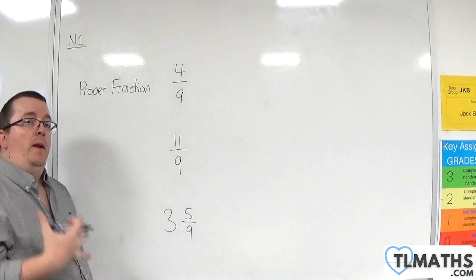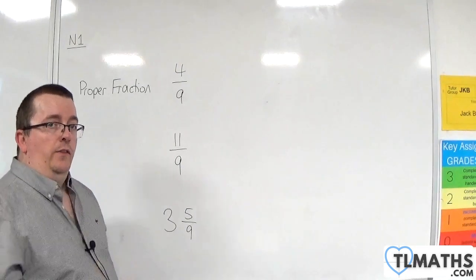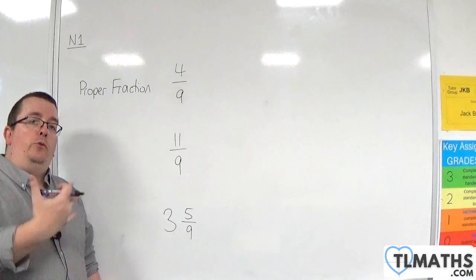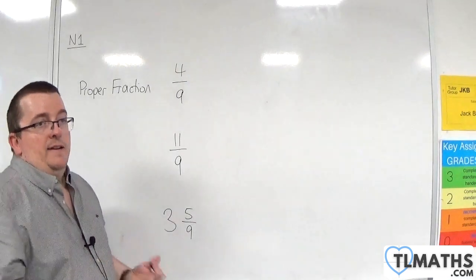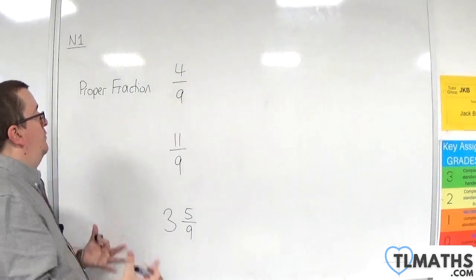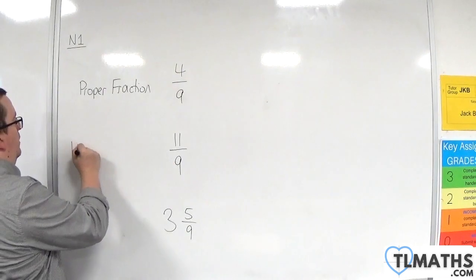Whereas the moment I tick over onto 9 ninths, or 10 ninths, or 11 ninths, or 12 ninths, or a million ninths, these are referred to as improper fractions.